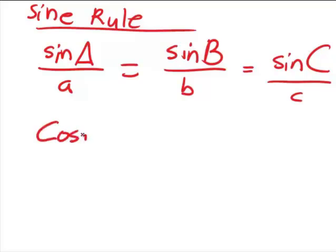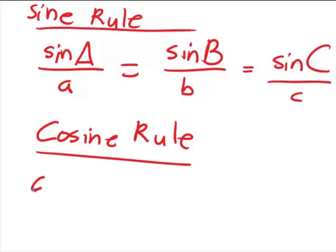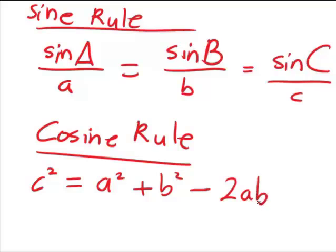The other rule that's quite helpful is the cosine rule. And the cosine rule is especially helpful if you know the length of two sides of the triangle and if you know the angle between those two sides and you want to find the length of the other side. And the cosine rule says that the length c squared is equal to a squared plus b squared minus 2ab times the cosine of the angle C.